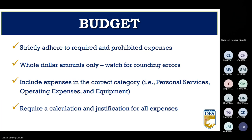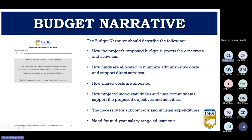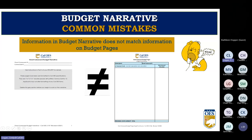Some final reminders about your budget: refer to the RFP to identify required and prohibited expenses and build your budget accordingly. Use whole dollar amounts only — budget errors are often due to rounding. Include expenses in the correct category, and all budget line items require a justification and calculation. The budget narrative allows the subrecipient to provide detail about their budget, including how the budget supports objectives and activities, the need for administrative costs, and the necessity for subcontracts. A common mistake is that budget narratives don't match the budget pages — every time your budget pages are updated, your budget narrative must be updated as well.